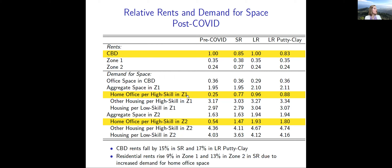Regarding space allocation: home office per high-skill worker in zone one triples in the short run, even without allowing supply to adjust yet. A much larger fraction of the fixed amount of space goes toward home offices. High-skilled workers actually consume a little less residential housing, and low-skilled workers consume even less. The big shift is toward home office. In the long run, we get an even bigger increase in home office per high-skill worker — almost a quadrupling in zone two.